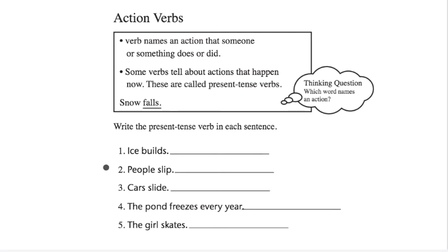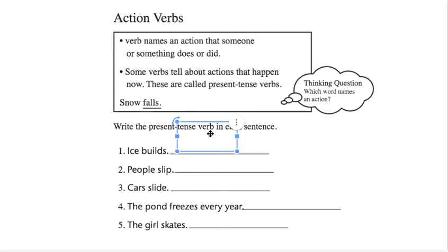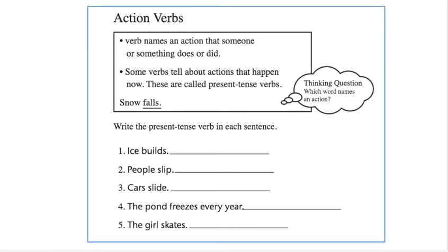Let's go down here. We have five more examples. Ice builds. We have to use the thinking question: which word names an action? Builds — is that when something or someone is doing something? Yeah, you're building something. Builds is the word in present tense.